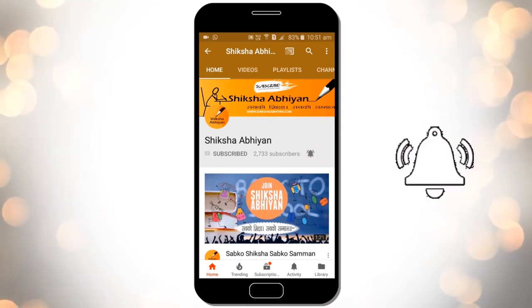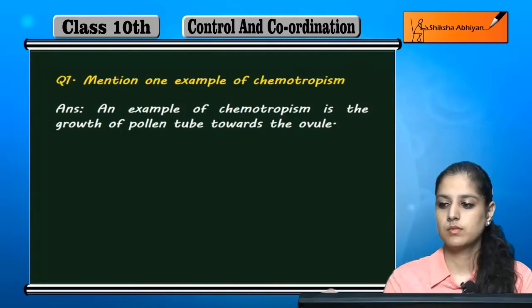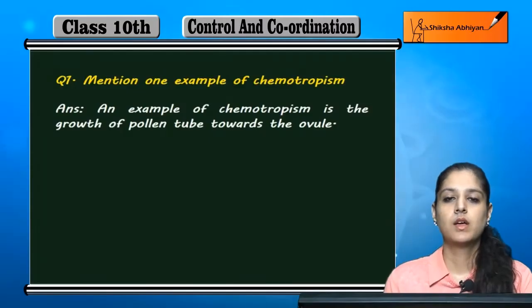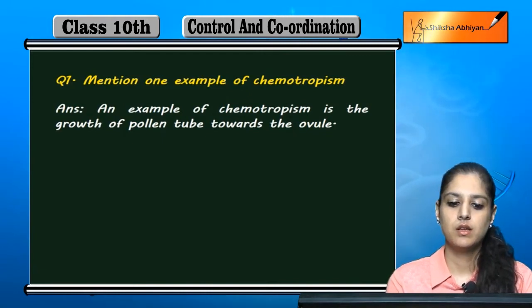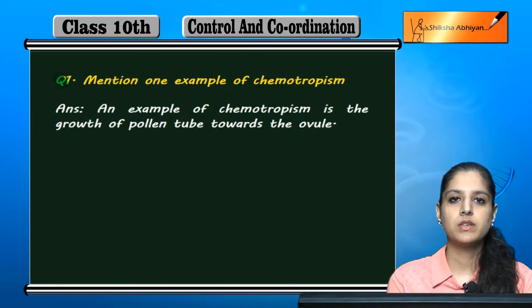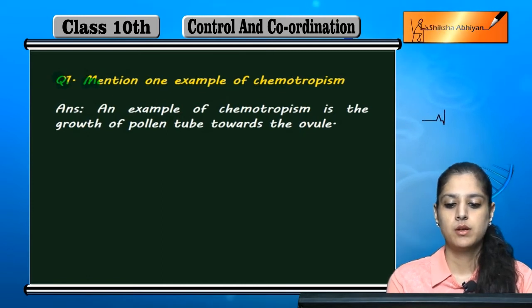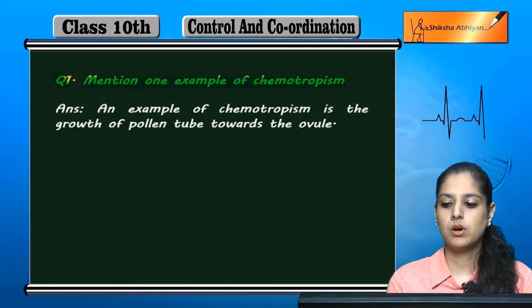Hello students. Control and Coordination chapter ke kuch extra questions discuss karenge. Pehla question hai: mention one example of chemotropism.